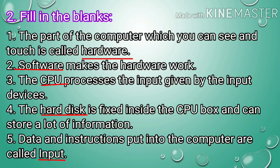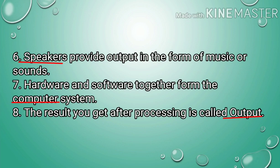Number 5: Data and instructions put into the computer are called input. Number 6: Speakers provide output in the form of music or sounds. Number 7: Hardware and software together form the computer system. Number 8: The result you get after processing is called output.